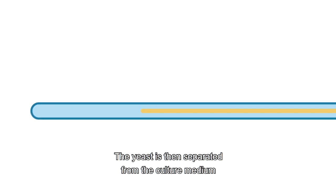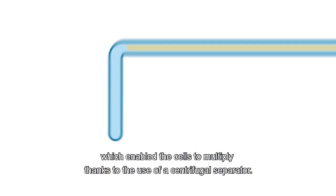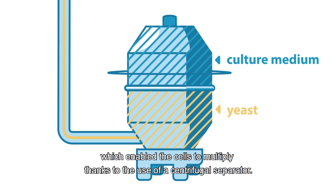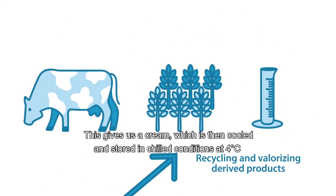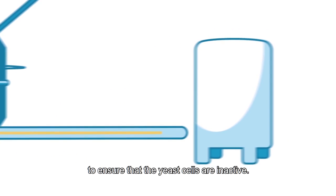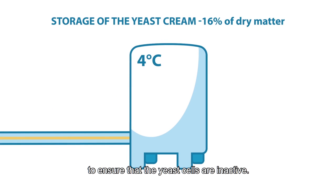The yeast is then separated from the culture medium, which enables the cells to multiply, thanks to the use of a centrifugal separator. This gives us a cream, which is then cooled and stored in chilled conditions at 4 degrees Celsius to ensure that the yeast cells are inactive.